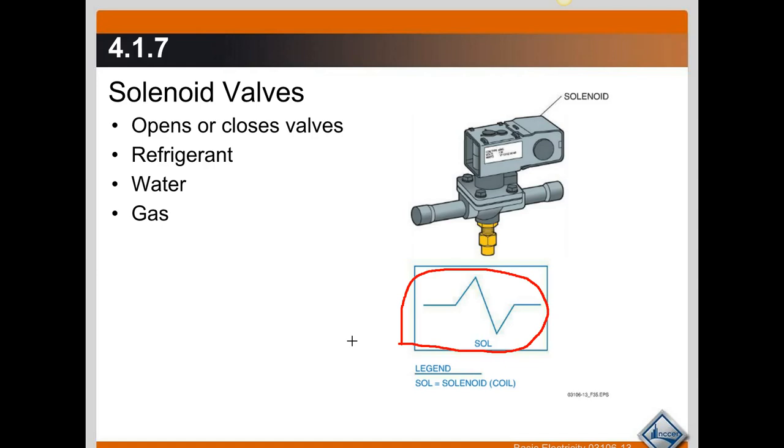This could also control fuel in some type of system if you needed to control the flow of fuel electrically. So solenoid valves open and close when power is applied or disabled from the coil, and these are normally in the closed position when the circuit is at rest.